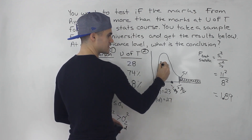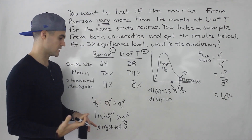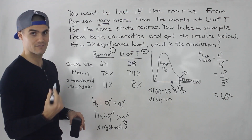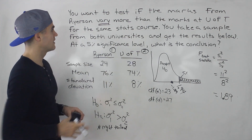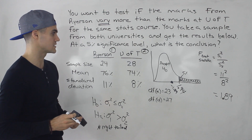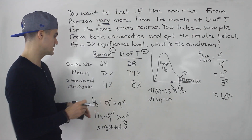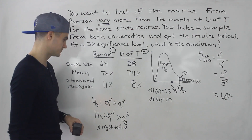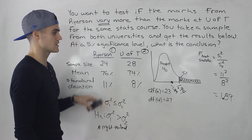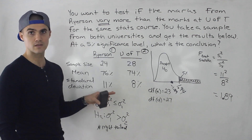The test statistic falls in the acceptance region, just before the critical value of 1.94. There's not enough evidence pointing towards the alternative hypothesis to drop the null. The conclusion is that there is not enough evidence from this data that the marks from Ryerson vary more than the marks at U of T for the same stats course. Also note: in this F-test, we didn't use the sample means at all — they were just given as a trick. We only need standard deviations when testing variances.